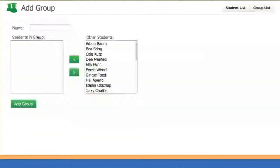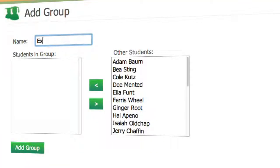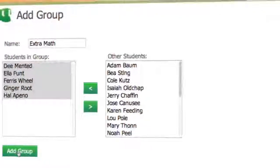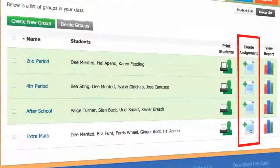To group students, click on create new group and enter a group name and select students to put into that group. Then when you create a game assignment, you can assign it to that group.